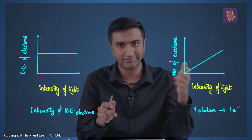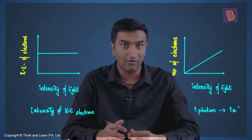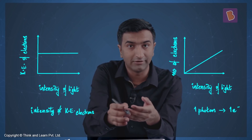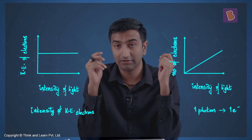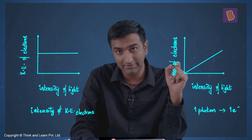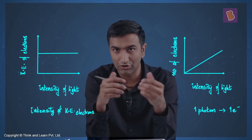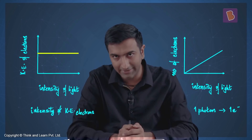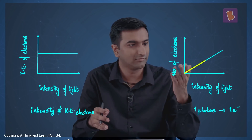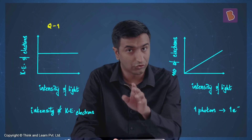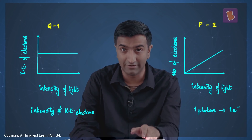Now look at intensity of light versus the same two parameters on the y-axis. When intensity increases, number of photons increases — simple. Intensity has absolutely no effect on energy; as intensity of light increases, kinetic energy of electrons is not going to change — it stays constant. But as intensity increases, number of electrons released increases linearly. So Q matches with 1 and P matches with 2.